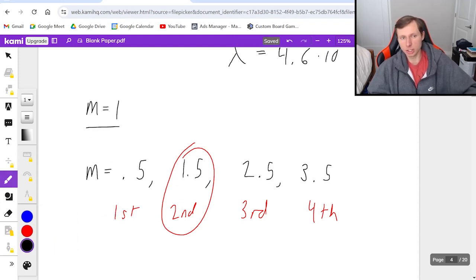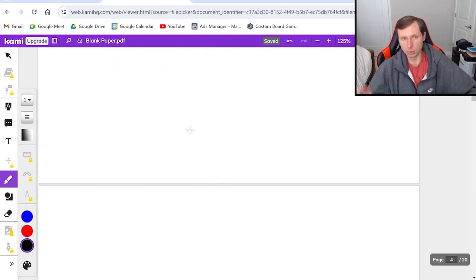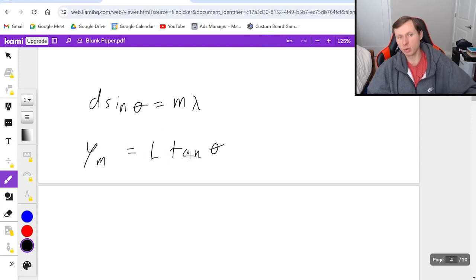But which equation? There are only two we could use: d sin θ = mλ, or y_m = L tan θ. The problem with the second one is I don't know the distance between the fringes. But I have everything I need for the first one. So that's what we'll do.